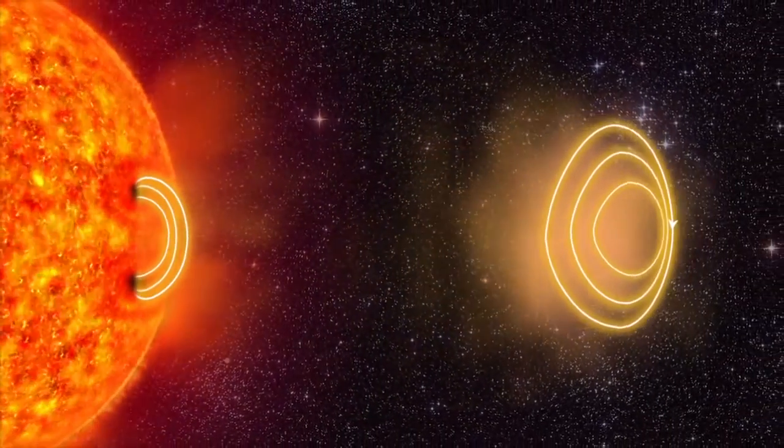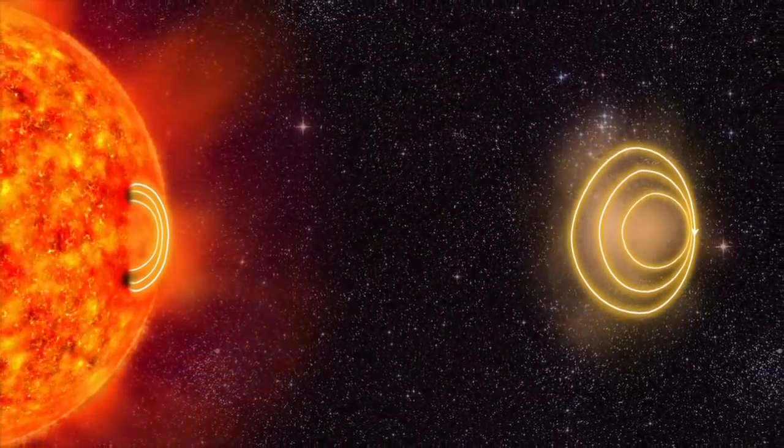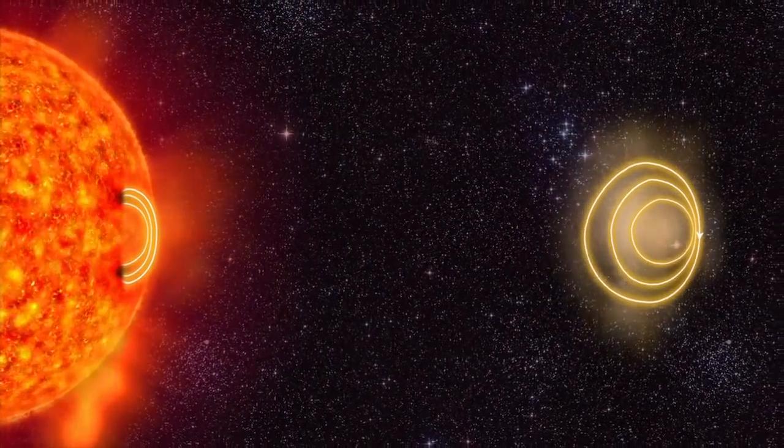Several billion tons of plasma is hurled out from the sun. This is called a solar storm.